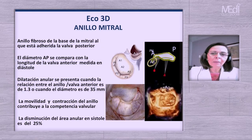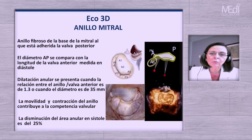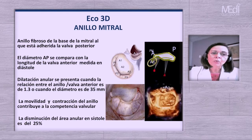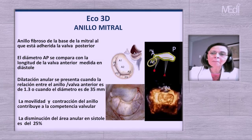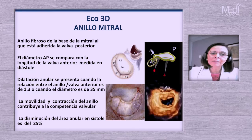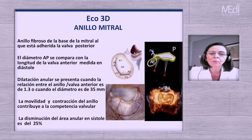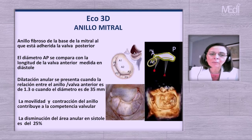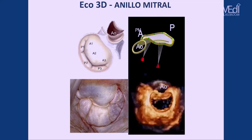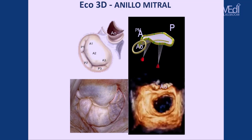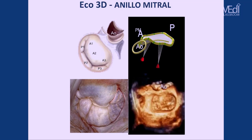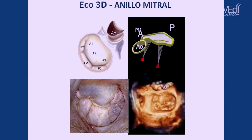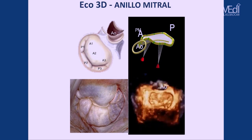El anillo mitral ha generado gran interés de estudio en los últimos años. El anillo fibroso es la base al que está adherida la valva posterior. Su diámetro anteroposterior se compara con la longitud de la valva anterior medida en diástole. La dilatación anular se presenta cuando la relación entre el anillo y la valva anterior es de 1.3, o cuando el diámetro es de 35 milímetros. La disminución del área anular en sístole es del 25%. El anillo mitral tiene forma de silla de montar, con dos partes más bajas a nivel de los trígonos y la valva anterior como la parte más alta. La ecocardiografía tridimensional permite un análisis más preciso del anillo que la bidimensional.